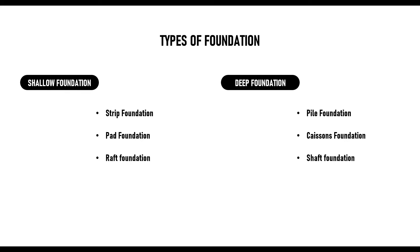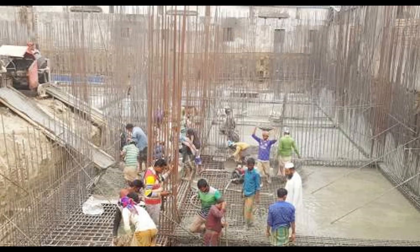Let us look at a picture of a typical raft foundation on a construction site. Here you can see a typical raft foundation construction — you have the reinforcement laid on the ground, then you pour the concrete. This actually depends on the type, because we have various types of raft foundation.